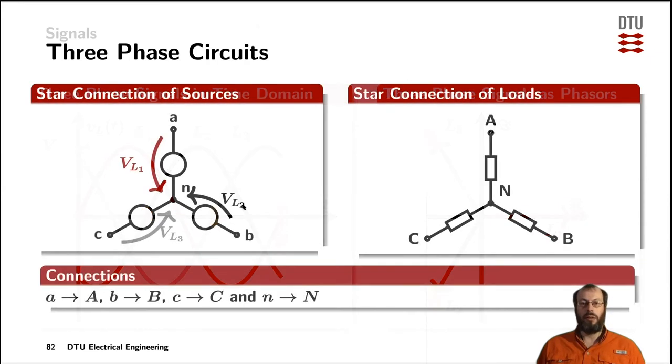These three voltages can be electrically connected in two different configurations. One is the star connection, shown in the left diagram on this slide, where the neutral line is in the middle.